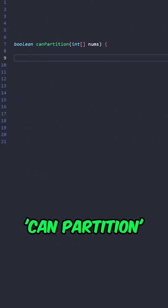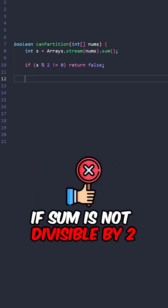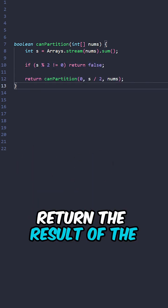Let's implement the function canPartition taking the input array. Calculate the sum of all the elements. If sum is not divisible by 2, return false. Return the result of the helper method.